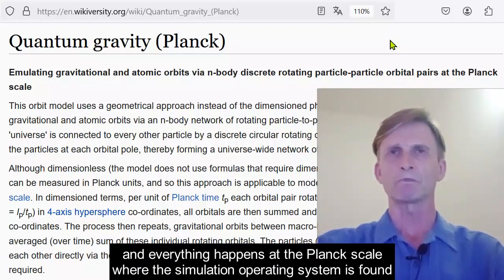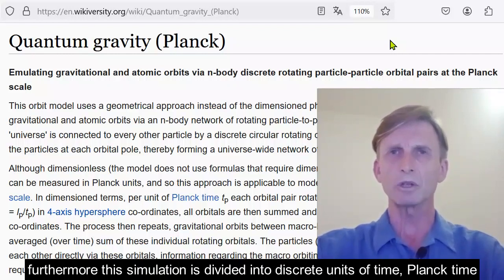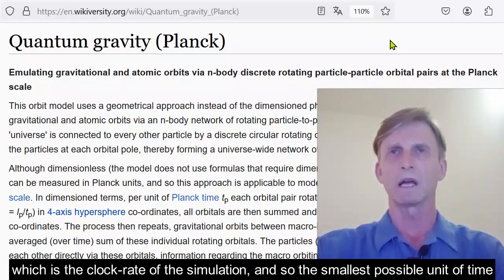And everything happens at the Planck scale, where the simulation operating system is found. The Planck scale is to the atom as the atom is to the universe, so it is a very small scale. Furthermore, this simulation is divided into discrete units of time, Planck time, which is the clock rate of the simulation and so the smallest possible unit of time.